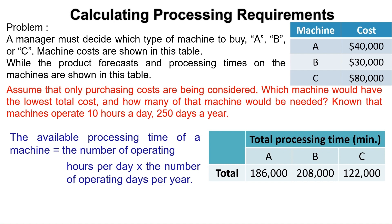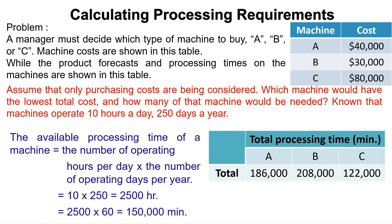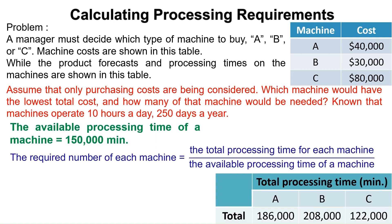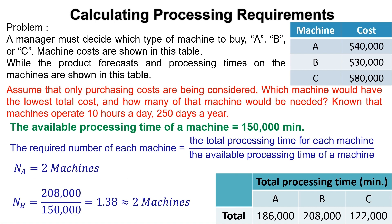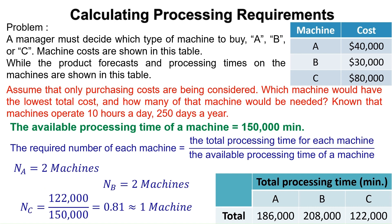Now calculate the available processing time of a machine by multiplying the number of operating hours per day by the number of operating days per year. This equals 10 times 250 equals 2,500 hours, multiplied by 60 to convert to minutes equals 150,000 minutes. The required number of machine A: N_A equals 186,000 divided by 150,000 equals 1.24, rounded up to 2 machines. For machine B: N_B equals 208,000 divided by 150,000 equals 1.38, rounded up to 2 machines. For machine C: N_C equals 122,000 divided by 150,000 equals 0.81, rounded up to 1 machine.